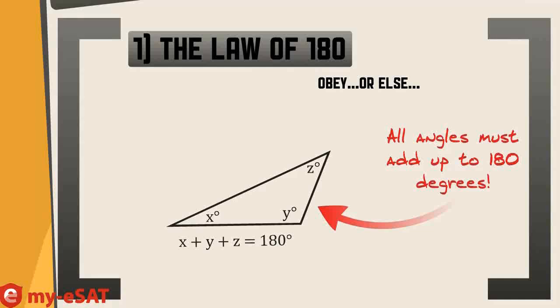All triangles have angles that add up to 180 degrees. So in our diagram below, angle x plus y plus z equals 180 degrees. But you already knew that, right?